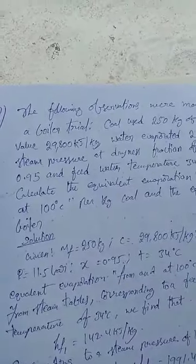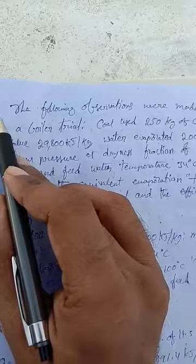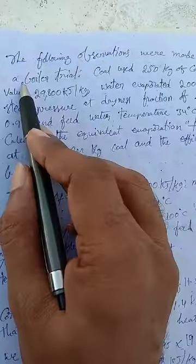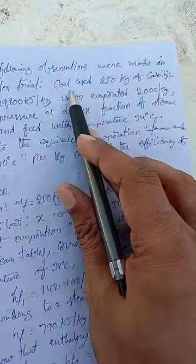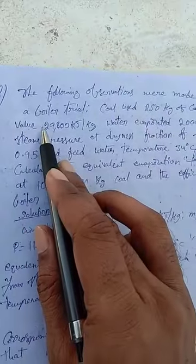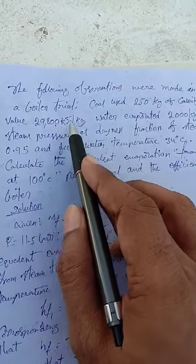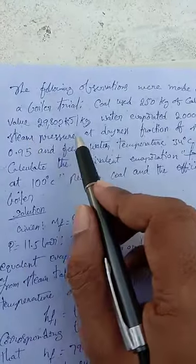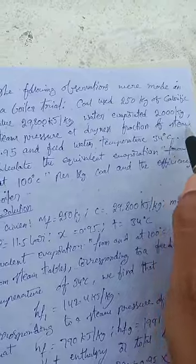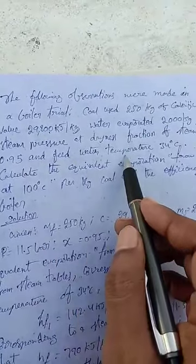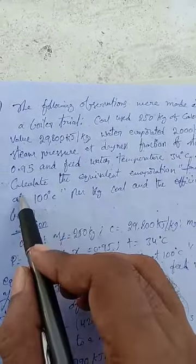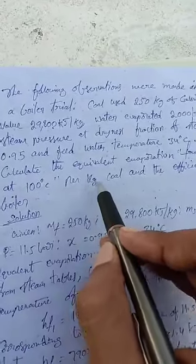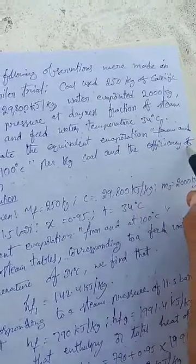The following observations were made in a boiler trial: coal used 250 kg with calorific value 29800 kilojoules per kg, water evaporated 2000 kg, steam pressure 11.5 bar, dryness fraction of steam 0.95, and feed water temperature 34 degrees Celsius. Calculate the equivalent evaporation from and at 100 degrees Celsius per kg of coal and the efficiency of the boiler.